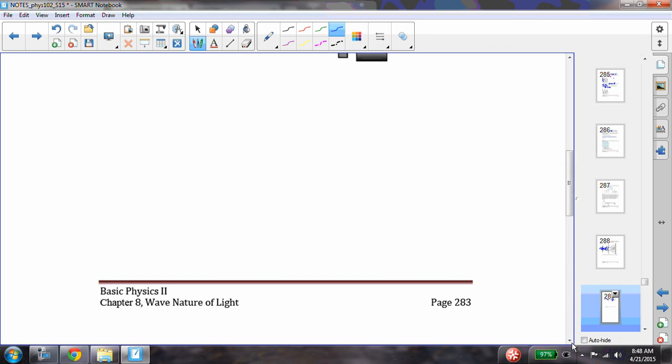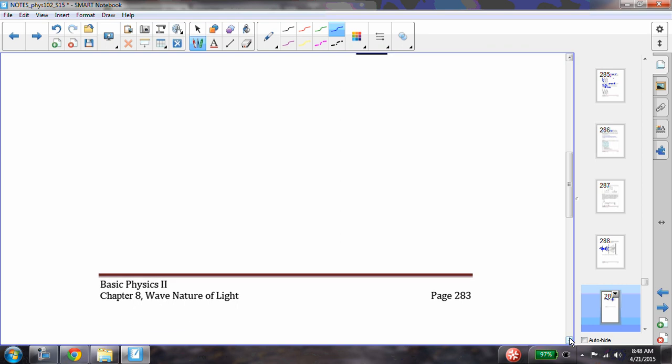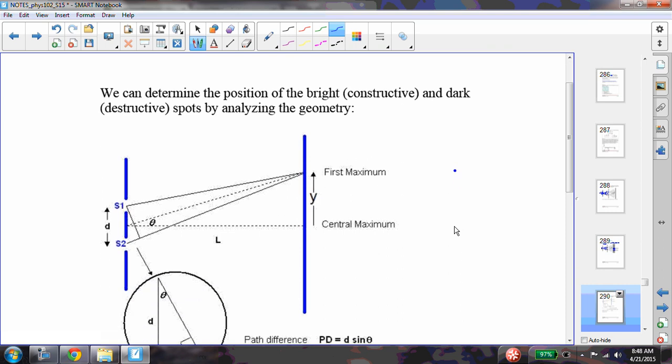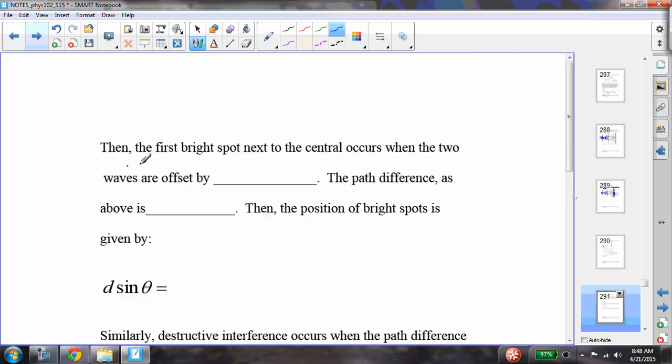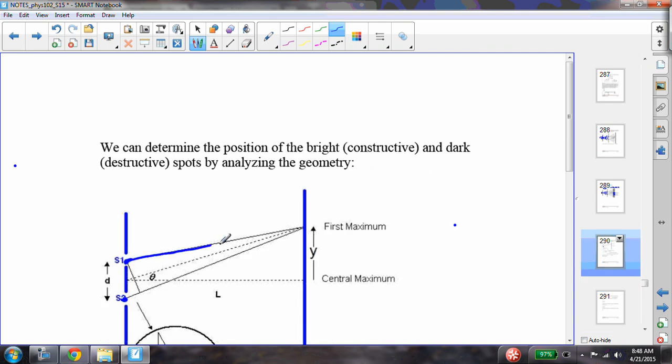What we can do, and he also showed mathematically how to determine where those bright spots and dark spots are located. We can do this fairly simply, it's just a basic argument for geometry. If I think about these two waves that are originating here and here, they're going to travel a slightly different distance. So this light ray will travel a shorter distance than this light ray just because of the orientation. And the difference in the two light rays is this distance right here.